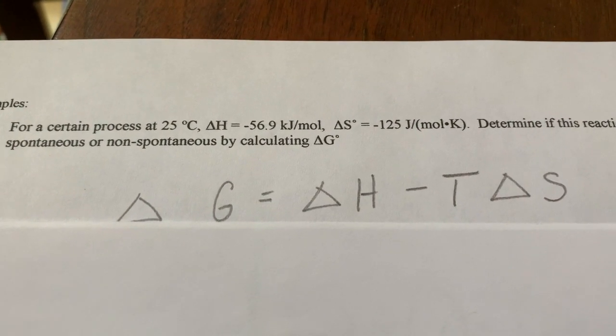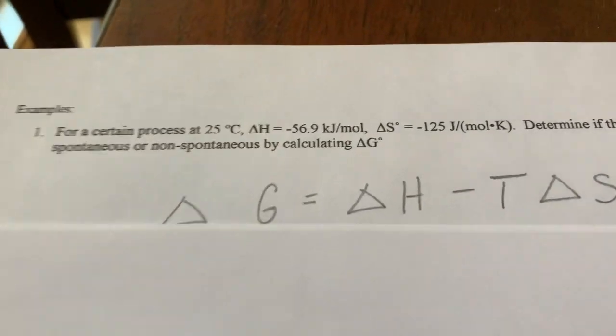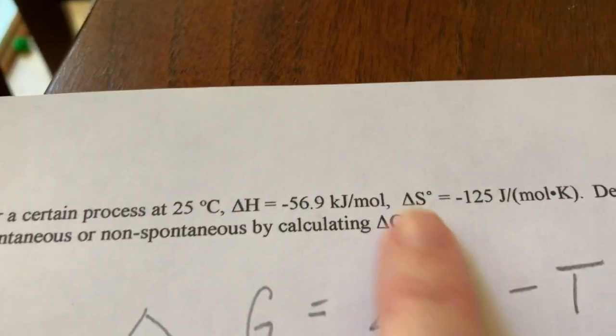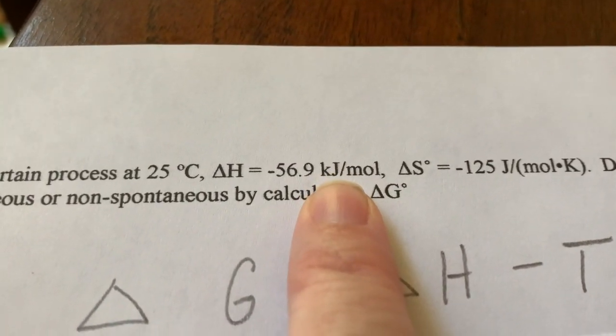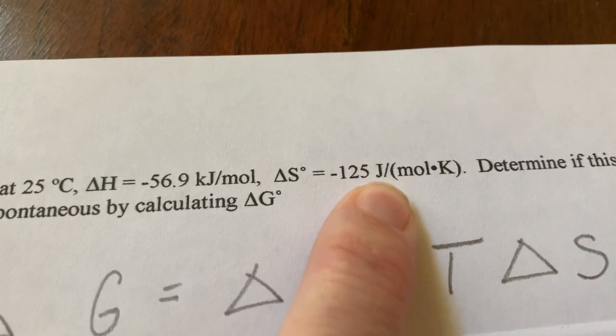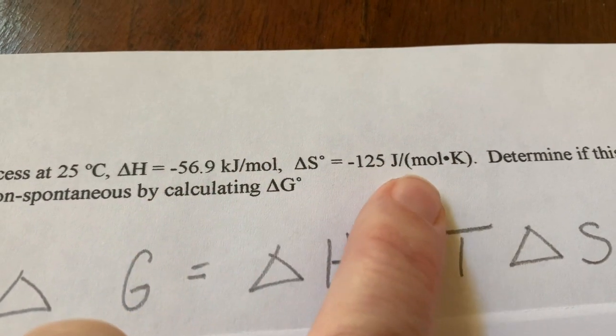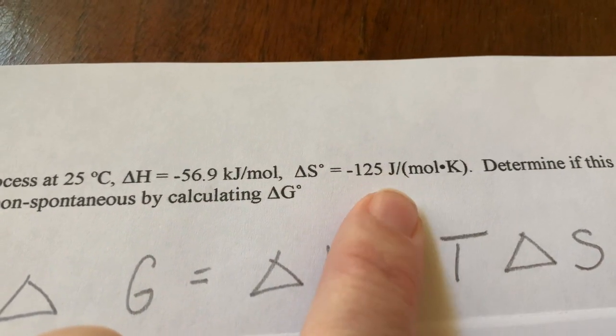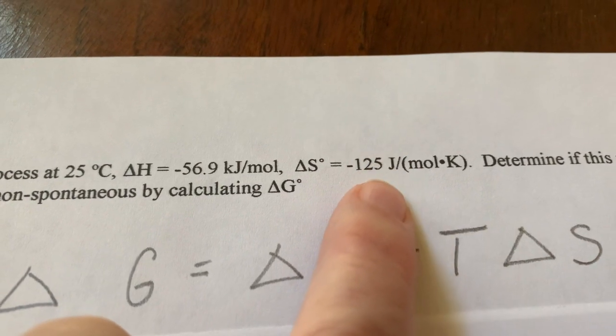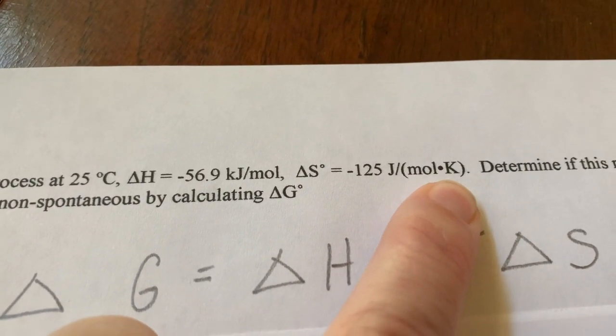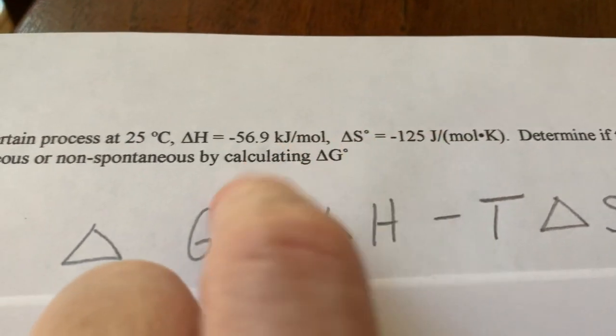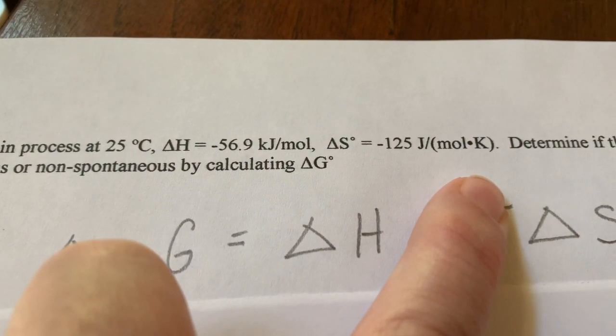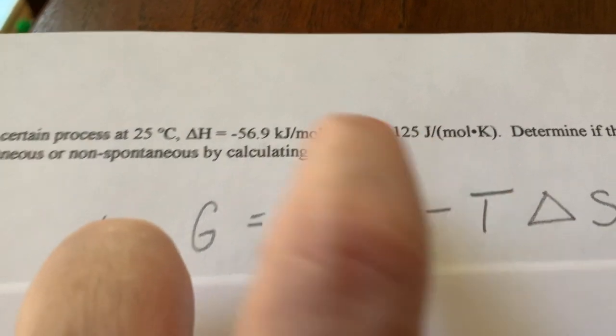Before we get started, a couple things as far as units because that's going to become really important. First, let's talk about the energy unit. Notice delta H is in kilojoules, delta S is in joules. You're going to have to change one of those, it doesn't matter which one, but you do have to change one. The other thing about units is please note that for your delta S, it's in terms of kelvin. I gave you the temperature in Celsius, that Celsius must be changed to kelvin. We know how to do that, we're just going to add 273 to it.